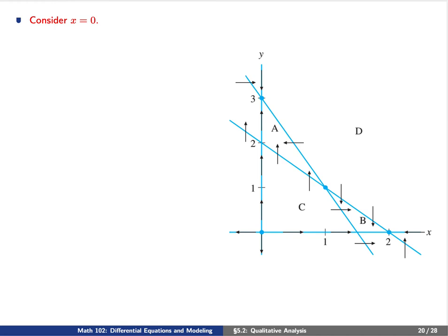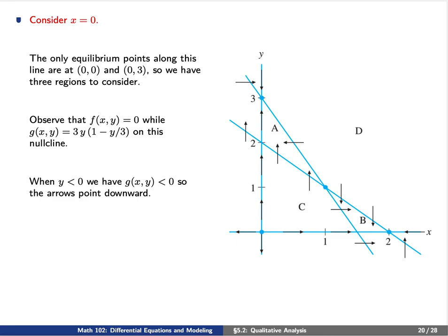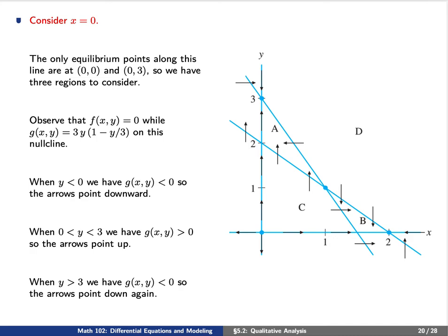Let's place the up-down and left-right arrows on these nullclines. For the vertical line x equals 0, there are only two equilibrium points: the origin and (0, 3). Since f equals 0 on this x-nullcline, we use g explicitly by setting x equals 0. When y is below the origin, g is negative so arrows point downward. When y is between the origin and (0, 3), g is positive so arrows point up. When y is above (0, 3), g is negative so arrows point down again.